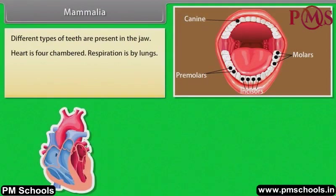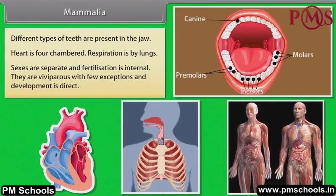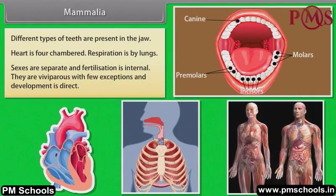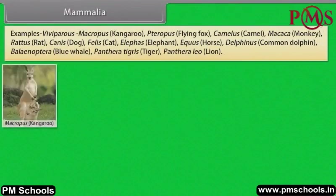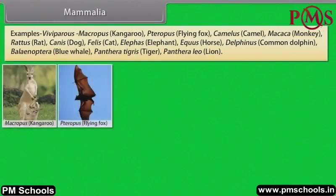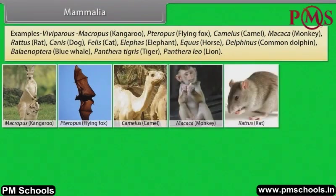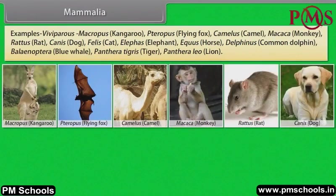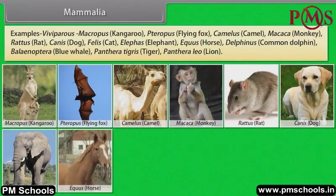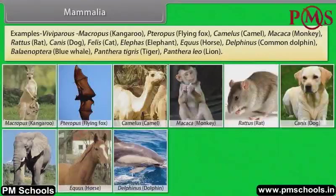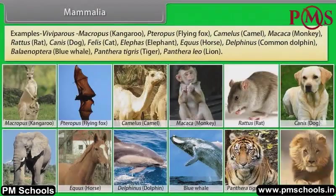Heart is four-chambered. Respiration is by lungs. Sexes are separate and fertilization is internal. They are viviparous with few exceptions and development is direct. Examples: Macropus (kangaroo), Pteropus (flying fox), Camelus (camel), Macaca (monkey), Rattus (rat), Canis (dog), Felis (cat), Elephas (elephant), Equus (horse), Delphinus (common dolphin), Balaenoptera (blue whale), Panthera tigris (tiger), Panthera leo (lion).